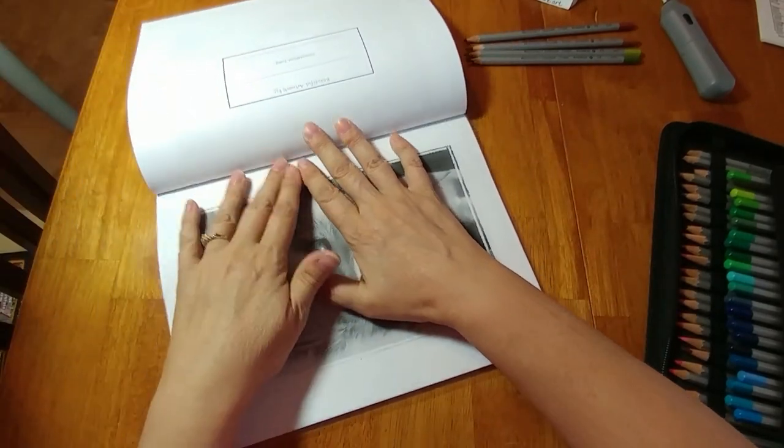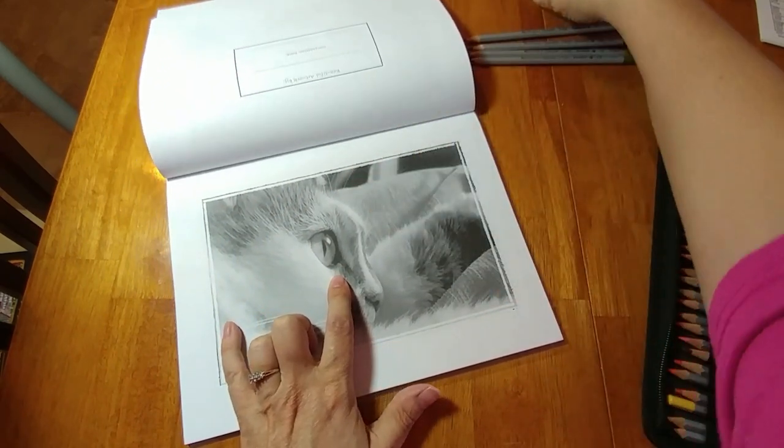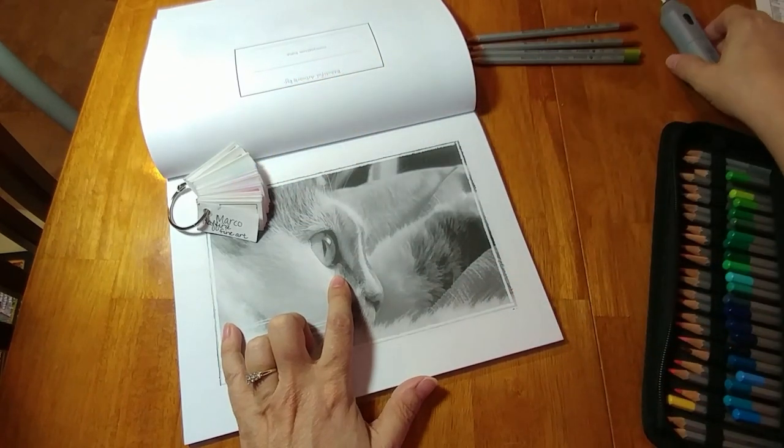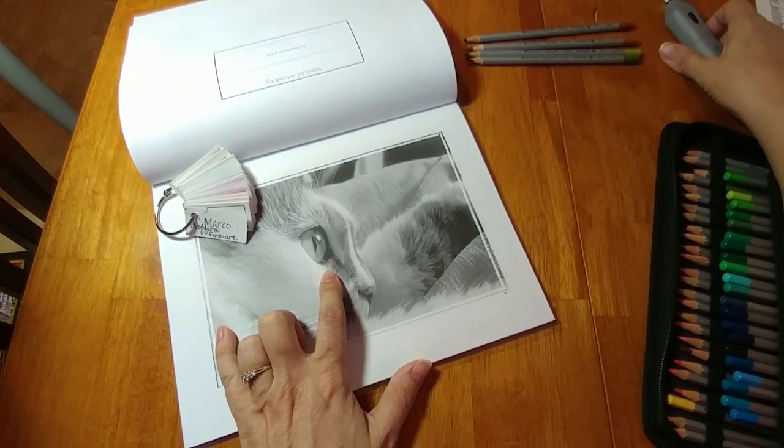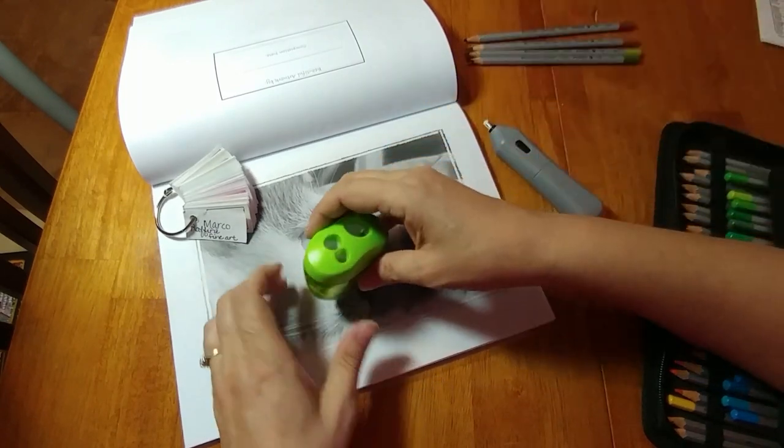What I want to work on today is just this eye. So I have already looked at my swatches. I am using my Marco Rubines. And I've got a pencil eraser handy. I've got a sharpener handy.